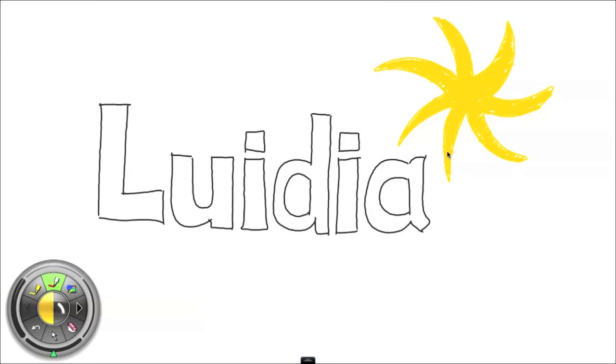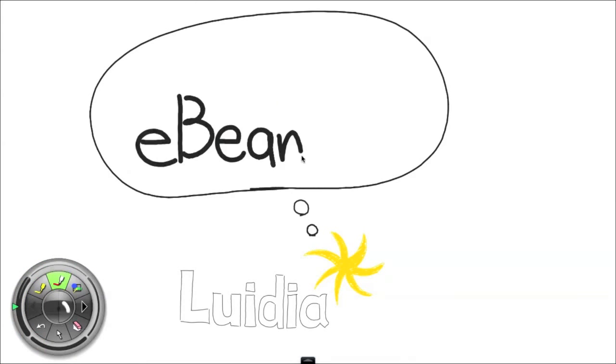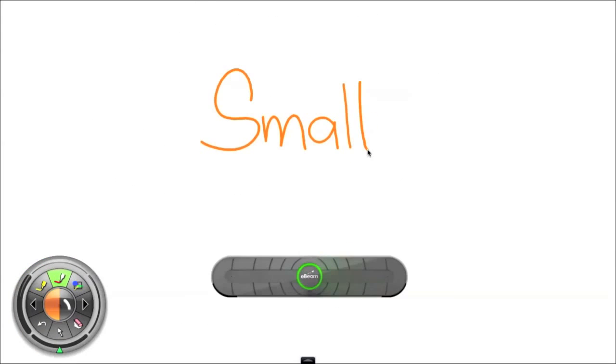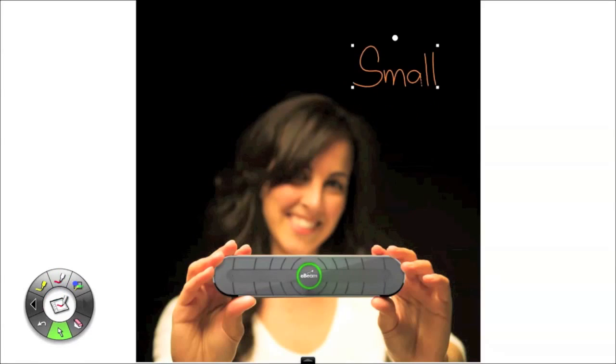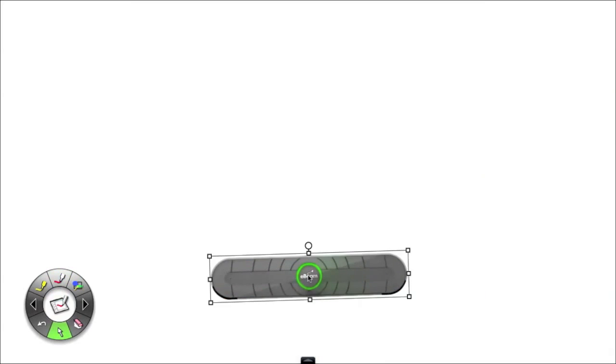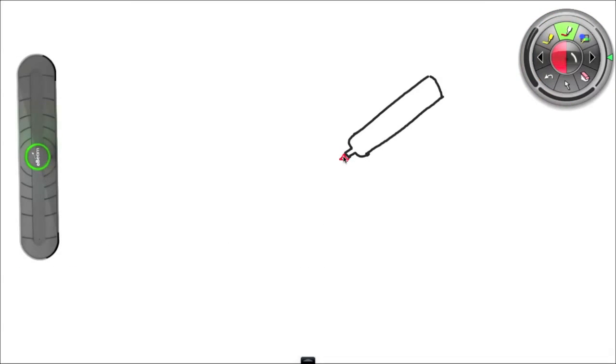Anyway, Lewidia came up with this awesome solution called ebMitch. Basically, it's a small, really small device with this crazy cool technology that tracks the position of your markers on the board.